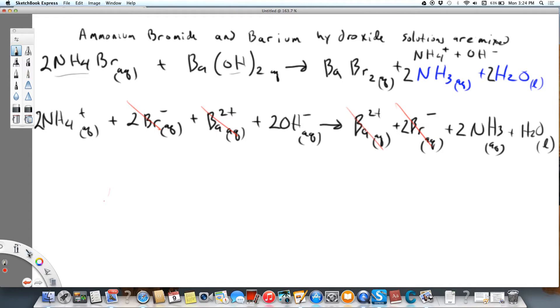Okay, so what we have left for our net ionic equation is 2NH4 plus 2OH. So there's our ammonium and our hydroxide, produce 2NH3 plus, there should be a 2 up on that, 2H2O. So that's our net ionic equation.